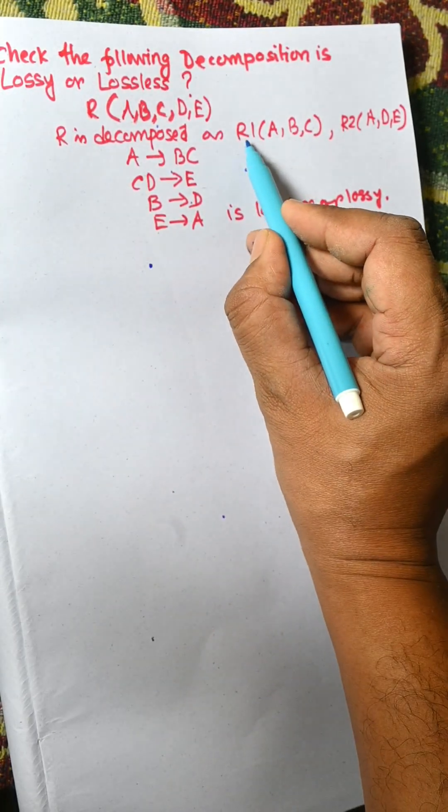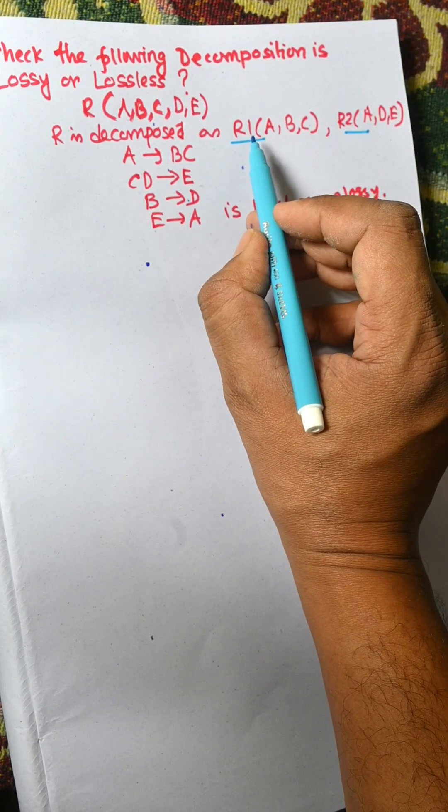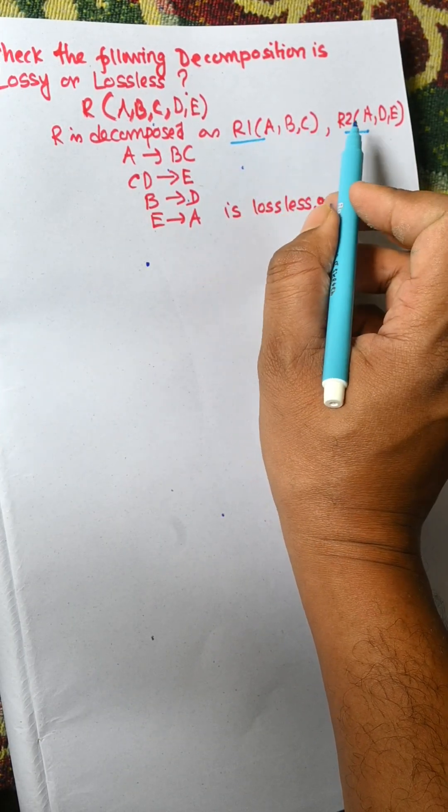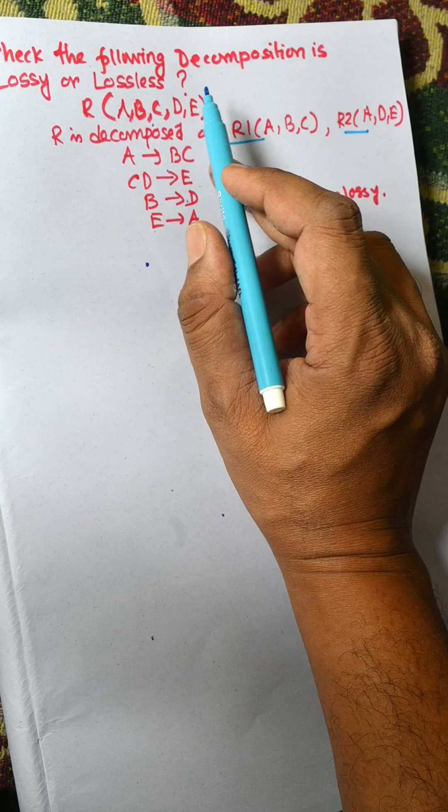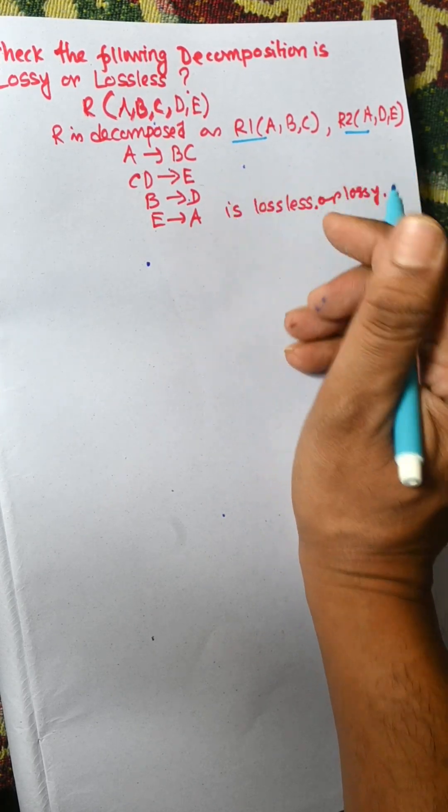When it is lossless, if we perform a natural join between R1 and R2, we get the original table R. Then it is lossless. If we get any surplus tuple, then it is lossy.